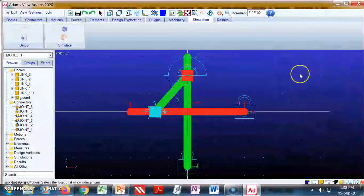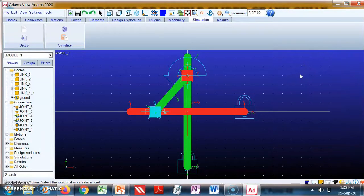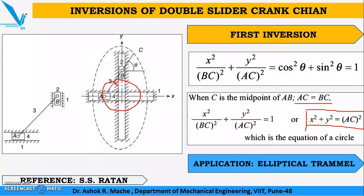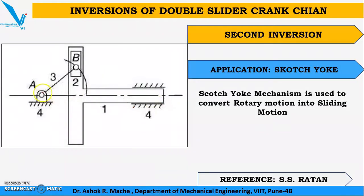We'll close this — the first inversion was also seen in earlier videos. Now, if we fix link number four — that is slider four — we get the second inversion. You can see that slider four, link number four, is fixed, and link one is made as one part. This application can be seen in the scotch yoke mechanism, where link number three rotates and this rotary motion is converted into sliding motion for link number one.